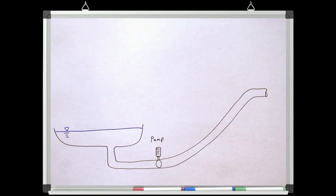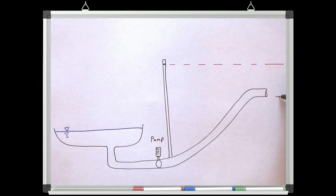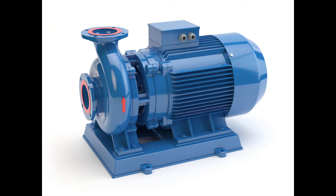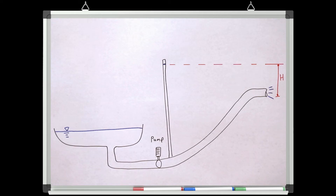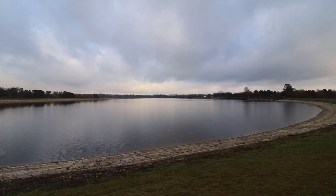When designing a pump system, there are two main things we need to work out as the designer. Firstly, how much total pressure head do we need the pump to add to the system — this tells us what size of pump we need. Secondly, how much power do we need to supply to the pump to give the required total pressure head — this tells us how much energy the system will use whilst running. So let's have a go at working through an example.